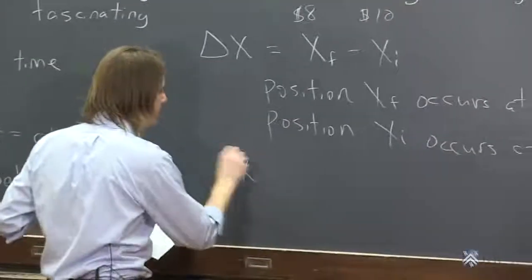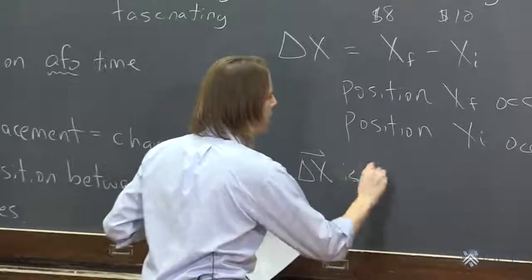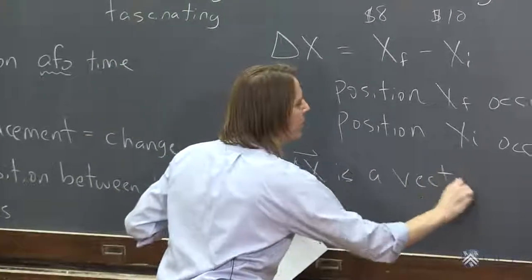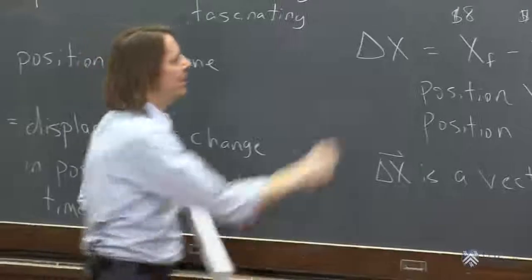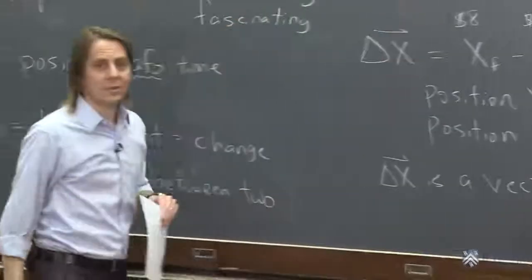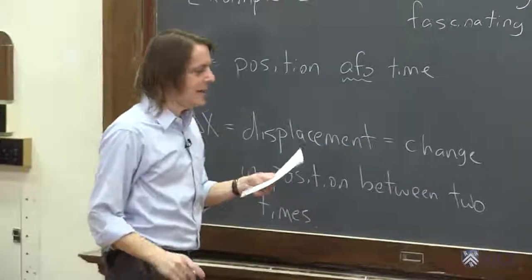Delta x is a vector. And that's why I put a vector symbol on top of it. Delta x is a vector. We have to deal with it, even in one dimension.